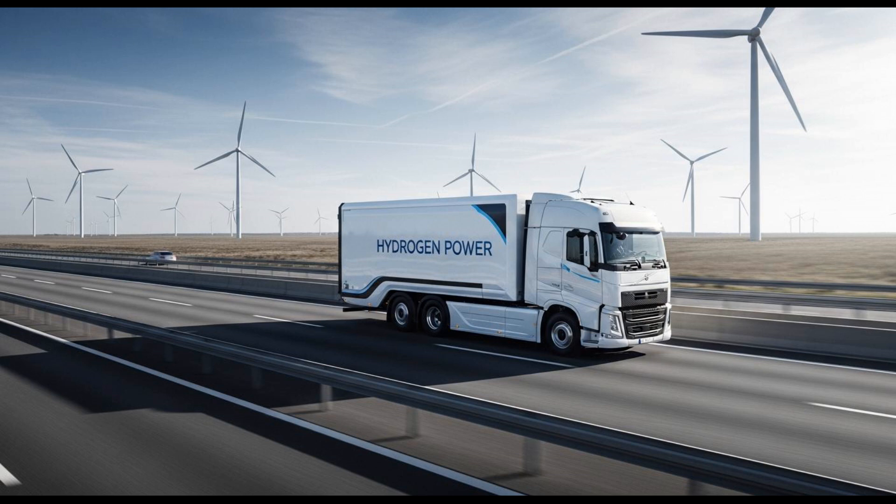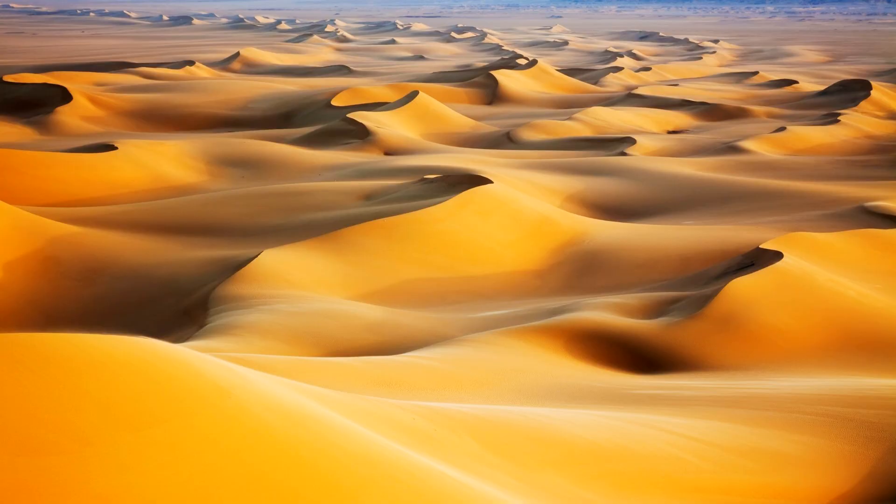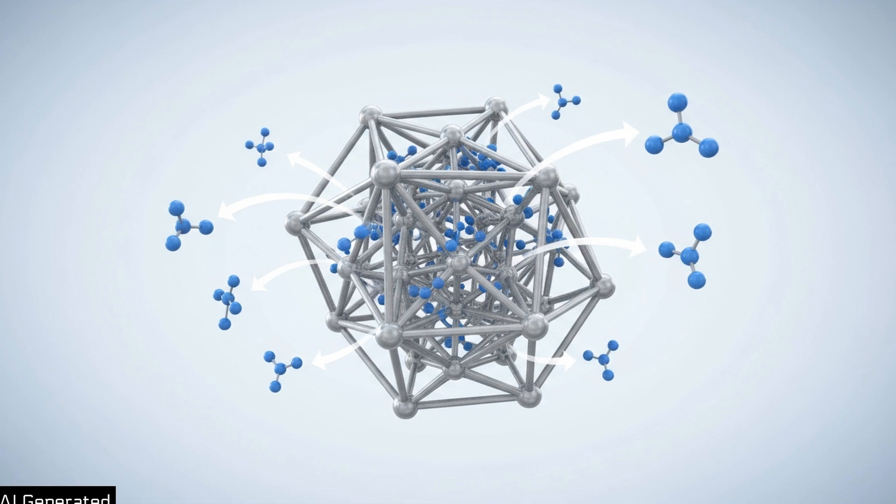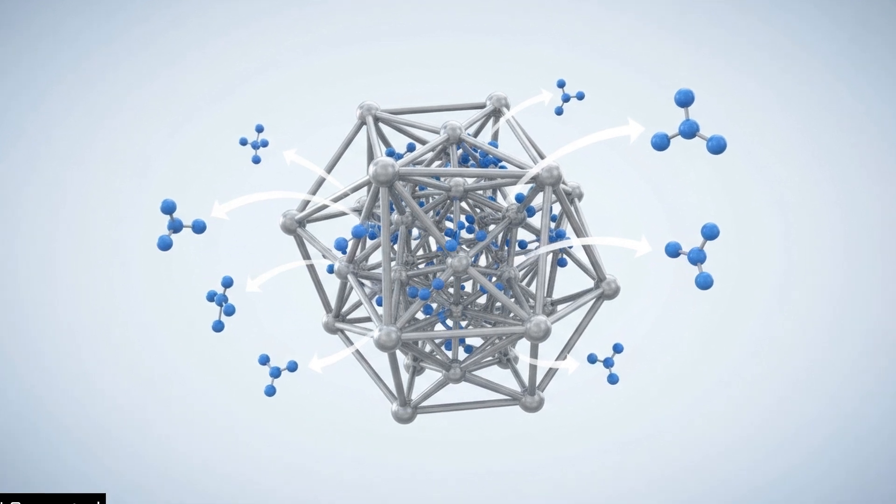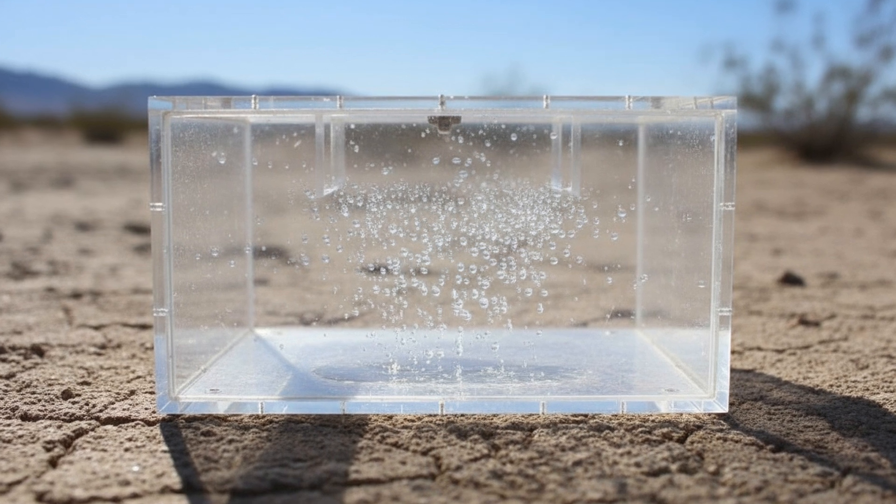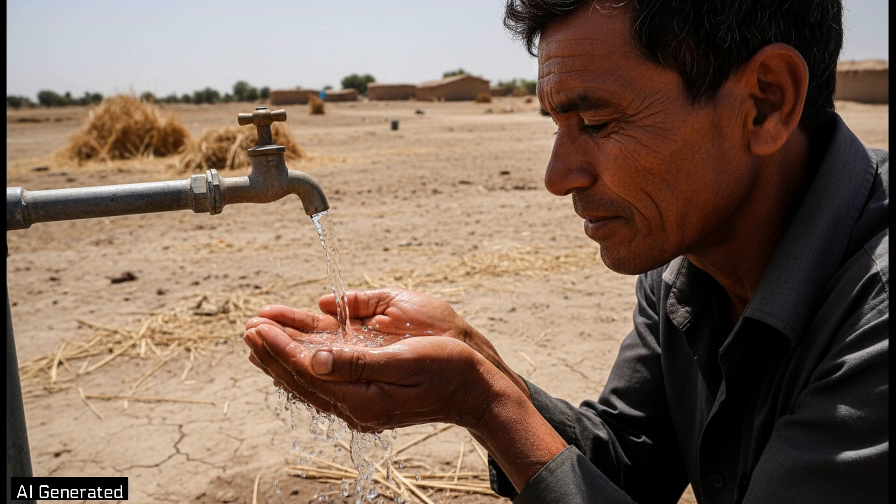Harvesting water from desert air: Some frameworks act like microscopic dehumidifiers, pulling water molecules out of even arid air and releasing drinkable water when warmed by sunlight. For communities facing chronic drought, that could be transformative.